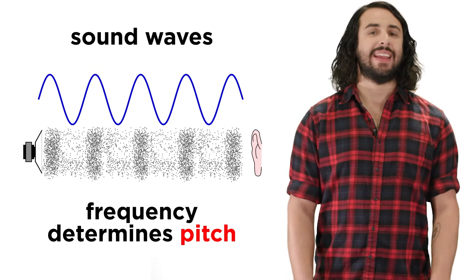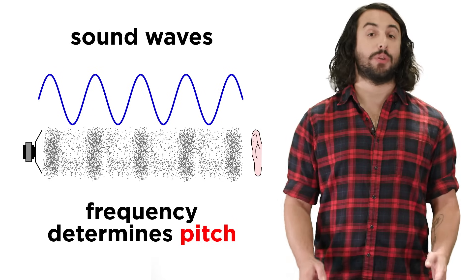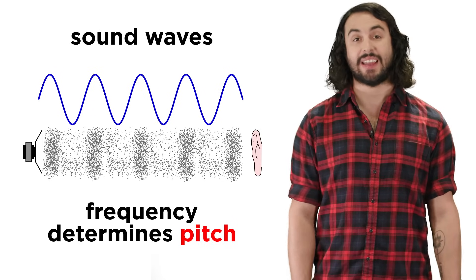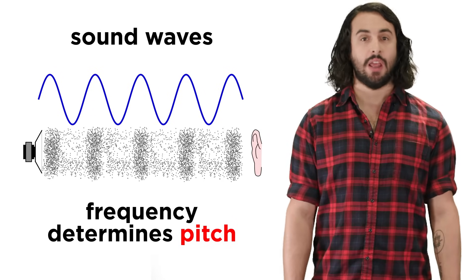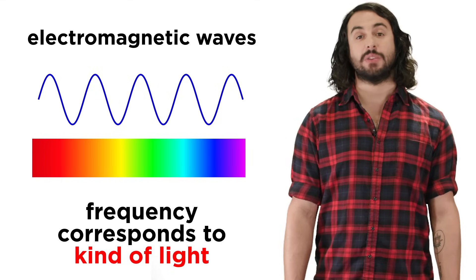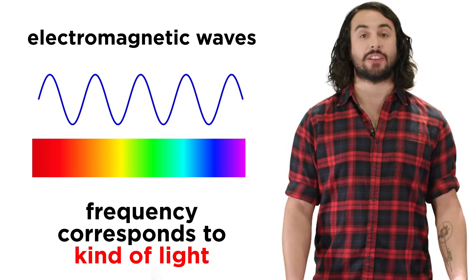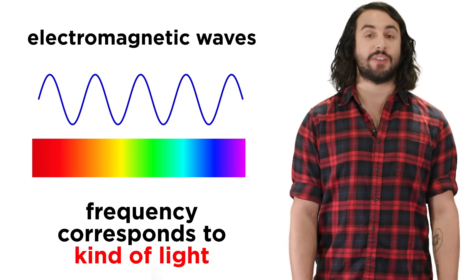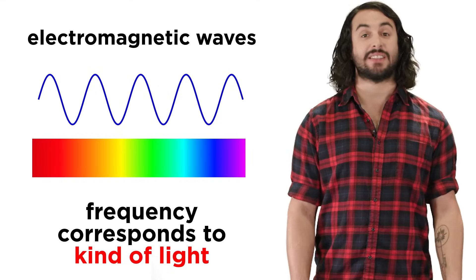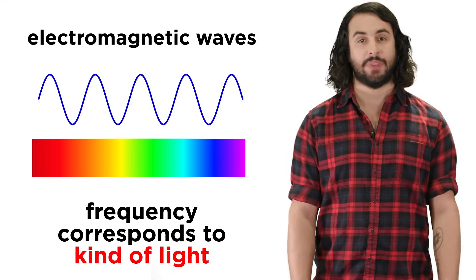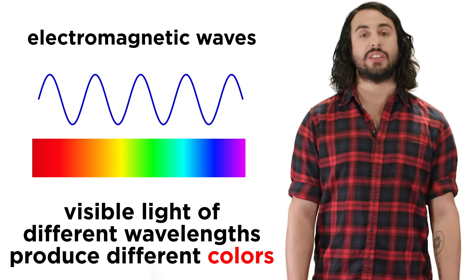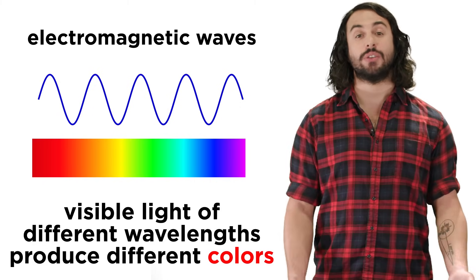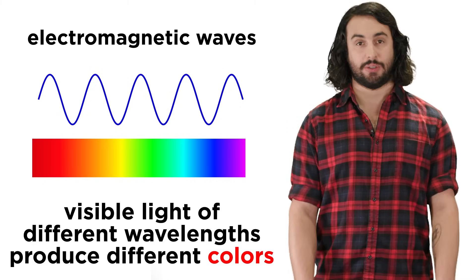But instead of different frequencies producing different pitches, like sound waves, different frequencies of electromagnetic waves produce different kinds of light. If the light is visible, these frequencies will correspond to different colors.